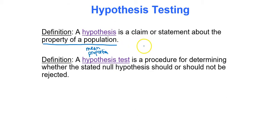You always have two hypotheses. A hypothesis test is a procedure for determining whether the stated null hypothesis should or should not be rejected. We'll have two hypotheses and determine which one we should keep and which one we should reject. There's some very specific terminology you should use when performing a hypothesis test.